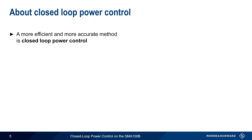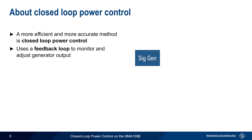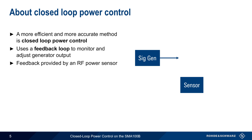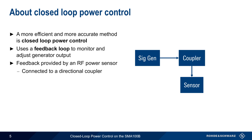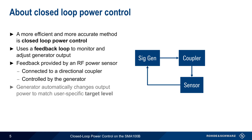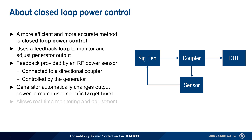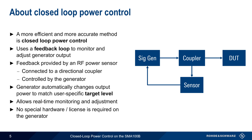A more efficient and more accurate method is something called closed-loop power control. Here, a feedback loop is used to monitor and adjust the generator output, with the feedback being provided by an RF power sensor. This sensor is connected to a directional coupler and provides feedback to the generator. The generator then uses this information to change the output power level to match a user-specified target level, usually defined as the desired level at the DUT input. Closed-loop power control allows real-time monitoring and adjustment, and does not require any special hardware, software, or license on the signal generator.